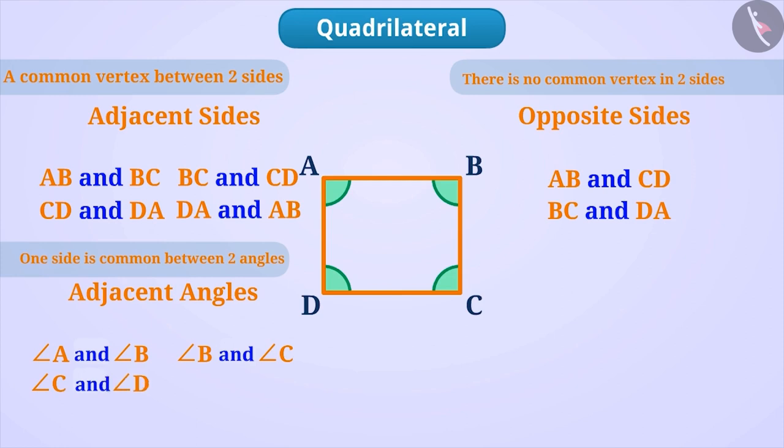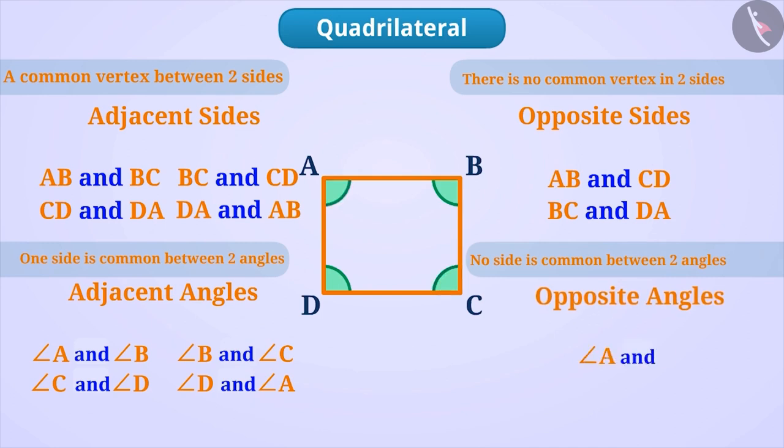But if no side is common between two angles of the quadrilateral, then such angles are called opposite angles such as angle A and angle C or angle B and angle D.